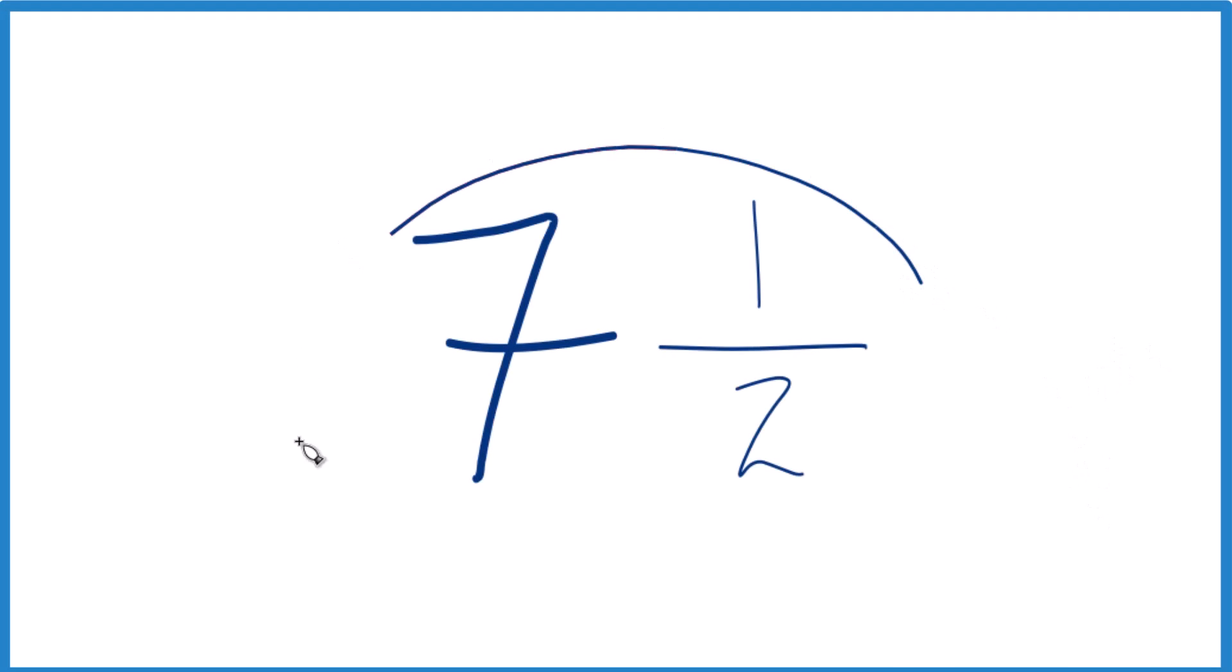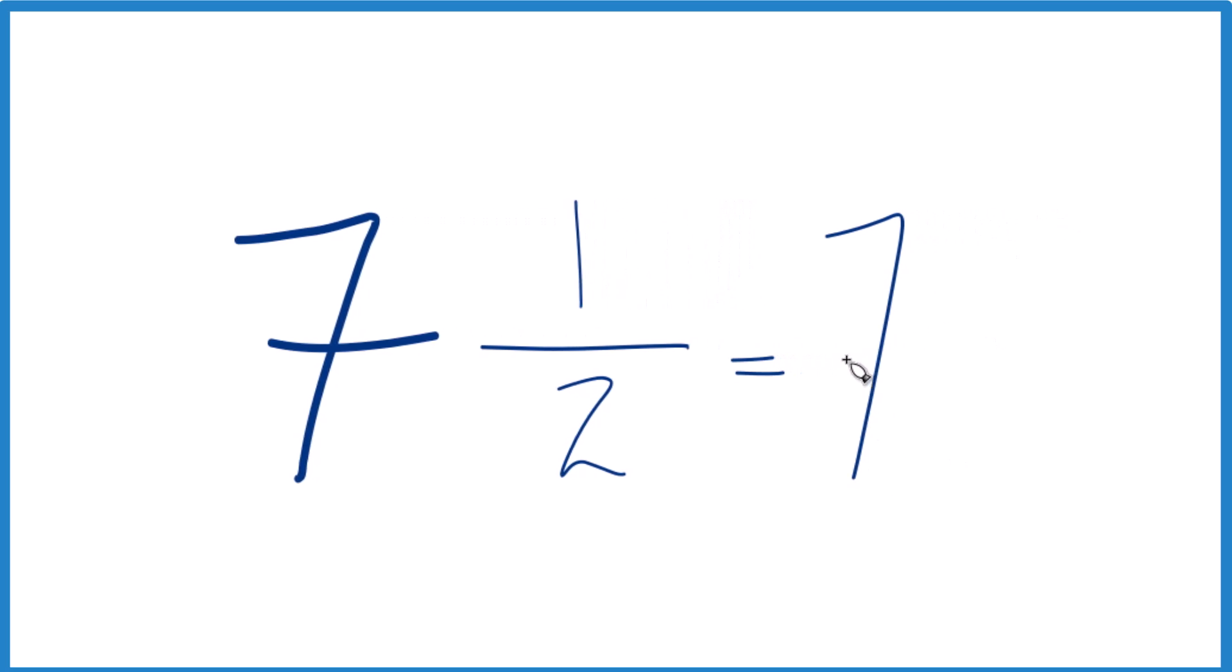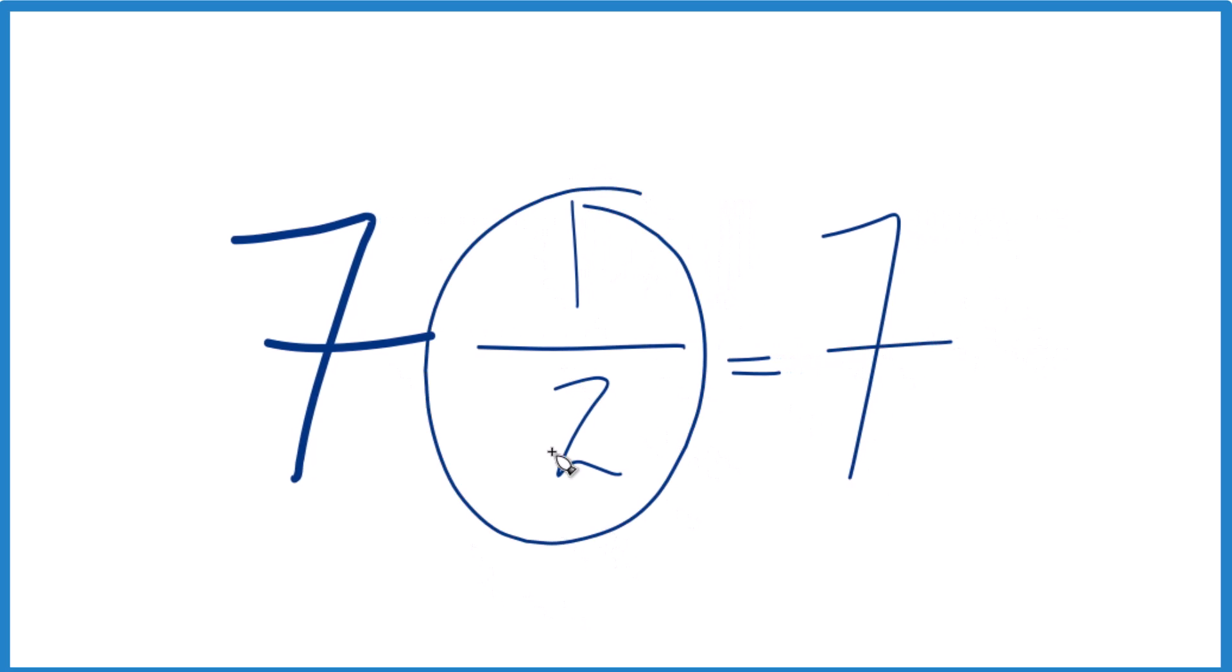So if you need to convert 7 1/2 to a decimal, here's how you do it. First off, what we could do is keep the 7 as a whole number like it is right there, and then convert 1/2, that fraction, to a decimal.